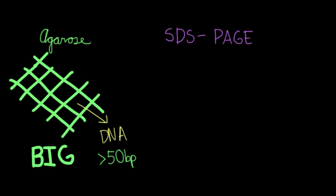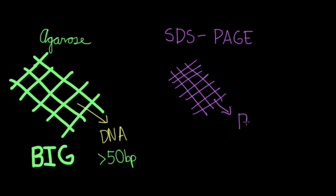SDS-PAGE, on the other hand, can be used for very small things. So imagine that being a much finer weaving with smaller pores. Although this can be used for small pieces of DNA, it can also be used for proteins.